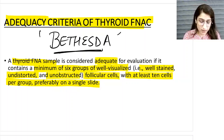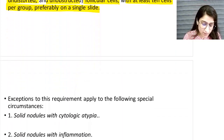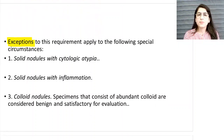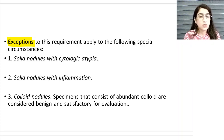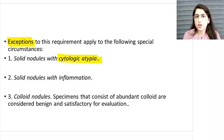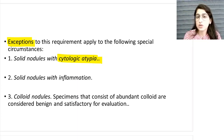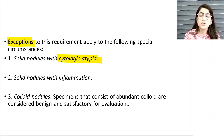This is what the Bethesda system says for calling a thyroid FNAC adequate. However, there are certain exceptions where you can ignore this criteria. The first exception is: if you see cells showing atypical features in the smear, a pathologist cannot say 'I'm not seeing six follicular groups so I won't report this.' You cannot ignore cytological atypia - you must report that case.